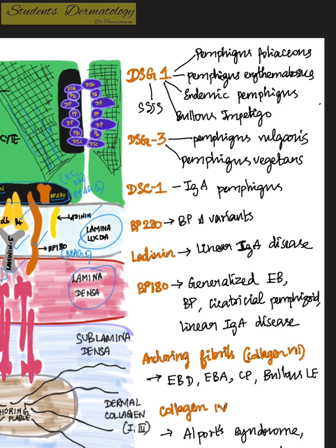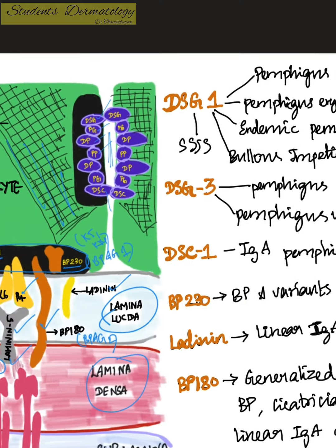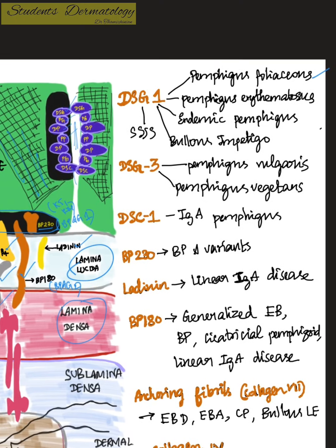The desmosome contains desmosomal cadherin proteins: desmoglein, desmocollin, plakoglobin, desmoplakin, and plakophyllin. Auto-antibodies against desmoglein 1 can lead to pemphigus foliaceus, erythematosus, endemic pemphigus, bullous impetigo, and staphylococcal scalded skin syndrome. Auto-antibodies against desmoglein 3 can lead to pemphigus vulgaris and vegetans, and against desmoglein 1 can lead to IgA pemphigus.